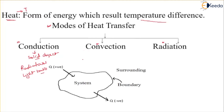The second mode is convection, where heat transfer happens between a solid and a liquid object. The system and surrounding can be changing from solid to liquid, liquid to solid, or liquid to liquid. Examples include a hot steaming cup of tea where heat is transferred from the tea to the cup, and a hot air balloon where heated air inside the balloon causes it to rise upward.